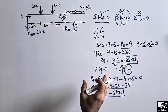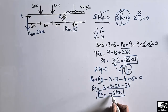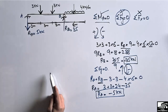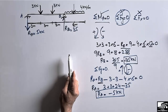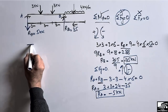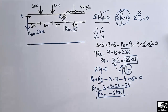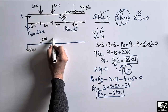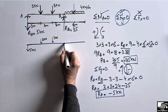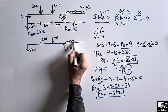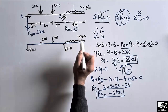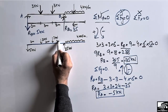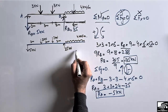We assumed both reactions acting upward, but the equation shows RA is negative, so RA acts downward at 5 kN. Now drawing the free body diagram: RA = 5 kN downward, then 3 kN downward at 3 meters, then 3 kN downward at 6 meters, then RB = 35 kN upward at 9 meters, and the distributed load of 4 kN/m over 6 meters beyond. The distances are 3 m, 3 m, 3 m, and 6 m.